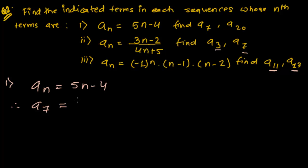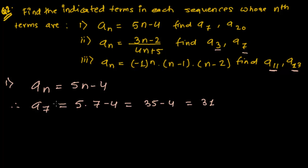That's all. I'm writing 5 times 7 minus 4. So 5 times 7 is 35, and then minus 4. So 35 minus 4, that is 31. This is the seventh term, a7.